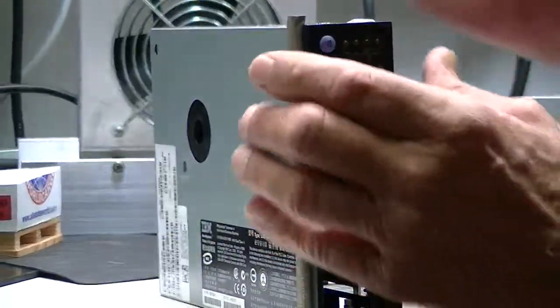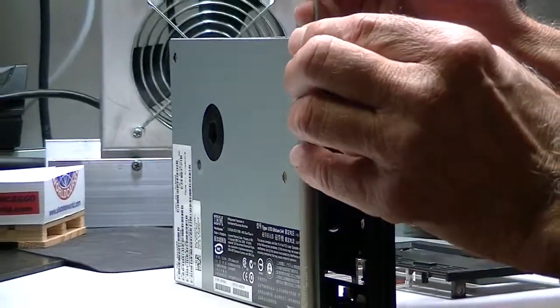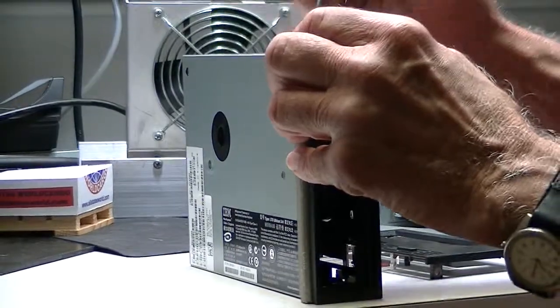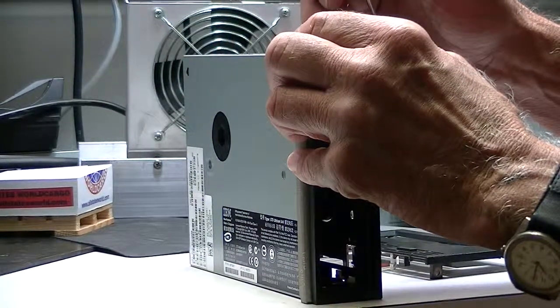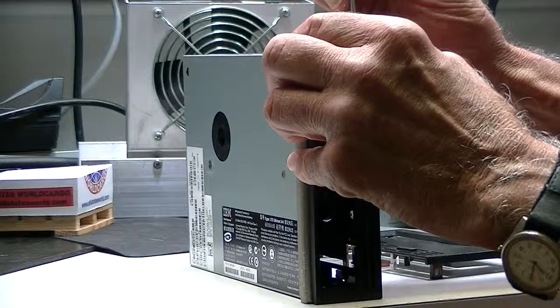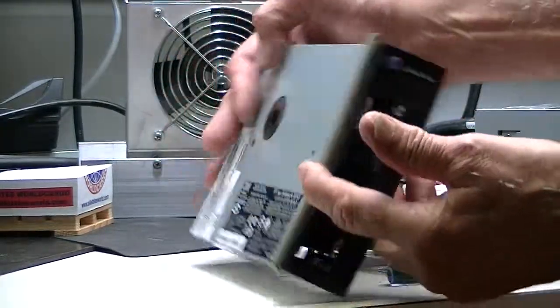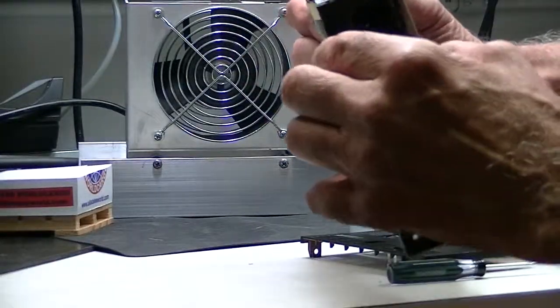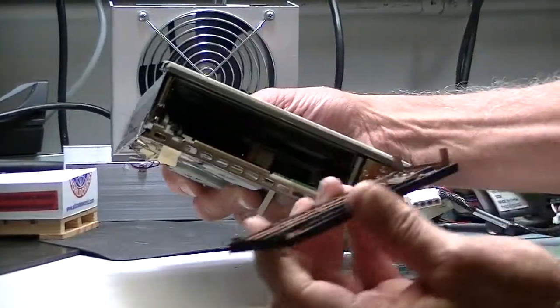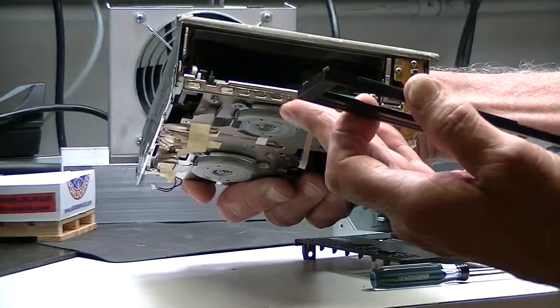I typically use a small screwdriver like that. You just push the tab in a little bit and wiggle the bezel back just a little. Then get the other tab and move it back a little more. Then you can remove this side that has the long tabs. Then this side comes out with the short tabs. Fairly simple.